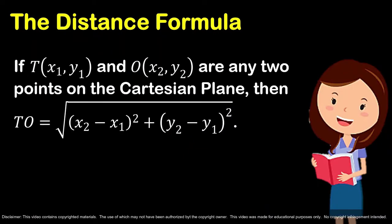If point T(x₁, y₁) and O(x₂, y₂) are two points on the Cartesian plane, then the measure of line segment TO is the square root of the sum of the squares of (x₂ minus x₁) and (y₂ minus y₁).